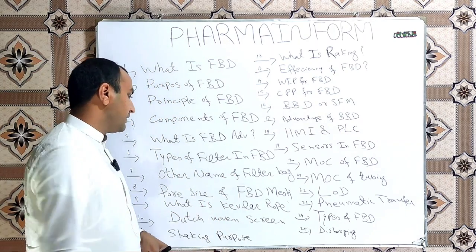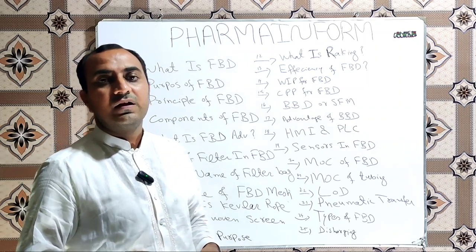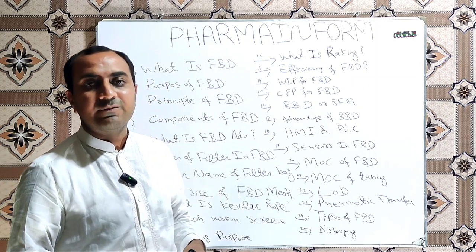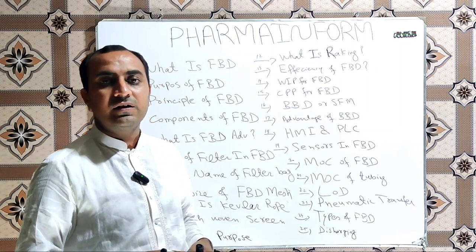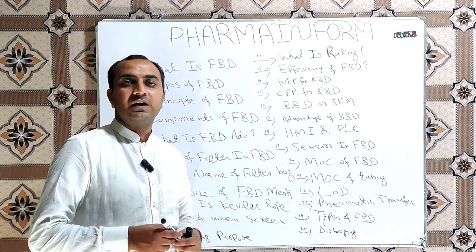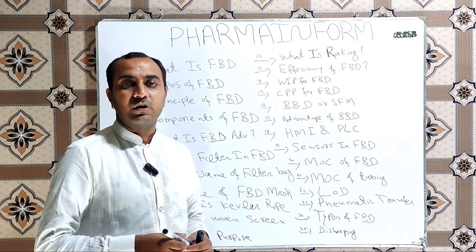What is Dutch woven screen? Dutch woven screen is the name of mesh which is installed in the FBD in the bottom of product trolley.